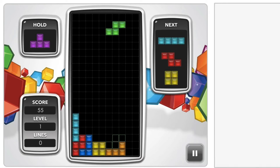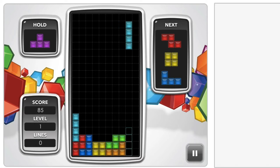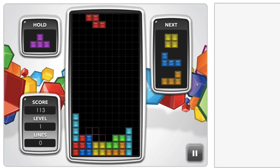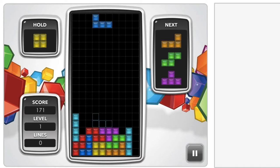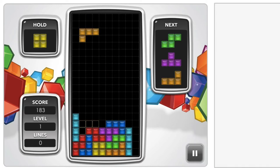So this is an example of me stacking pieces and I want to create what we call a well, which is the gap on the very right to put a long bar and get rid of four lines at a time.